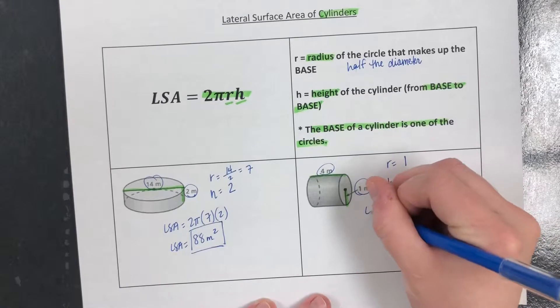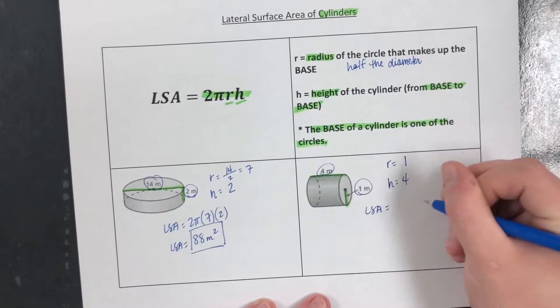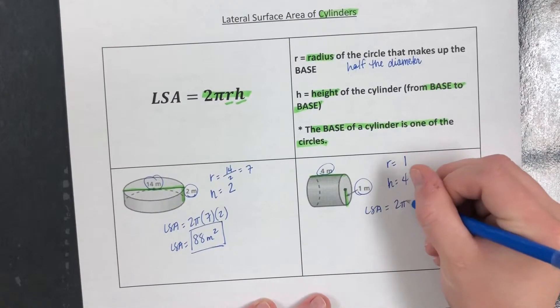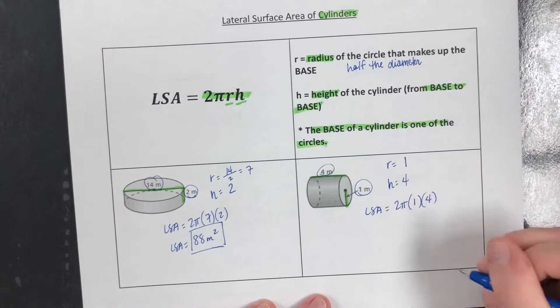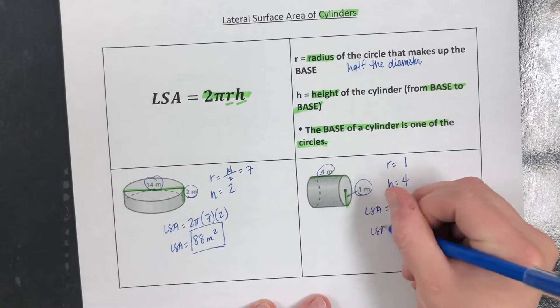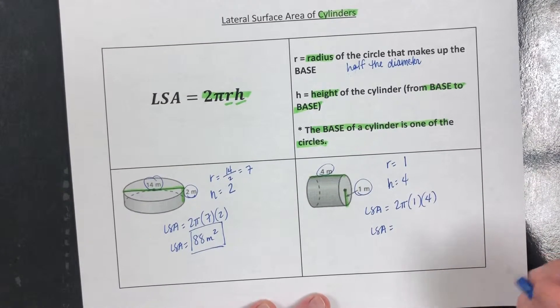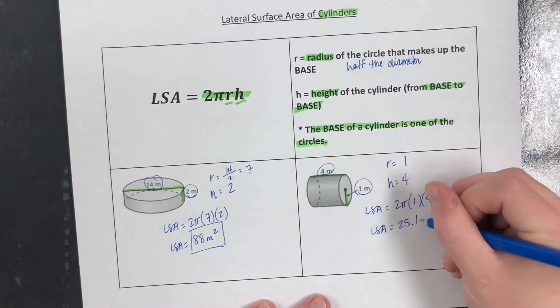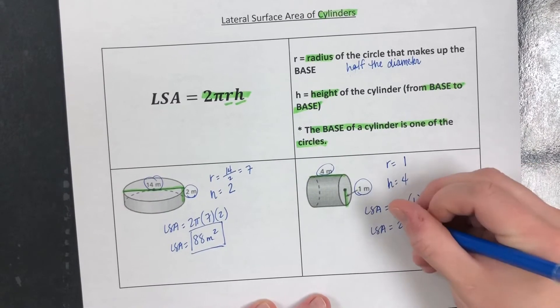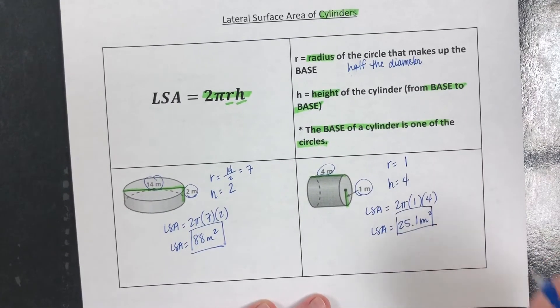Plug it in. Lateral surface area: 2π times the radius times the height. Plug it all into your calculator. That means the lateral surface area is 25.1 meters squared.